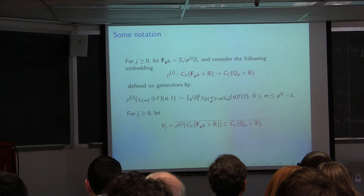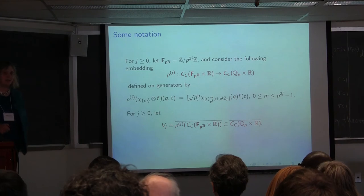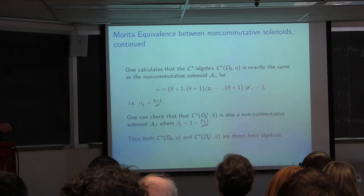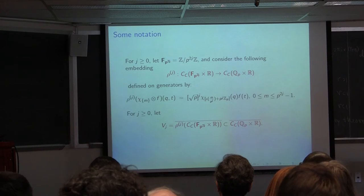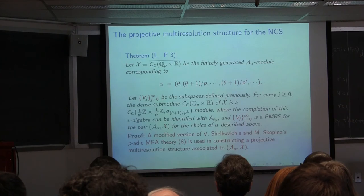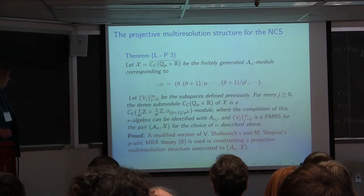We had to study p-adic wavelets — finding work by Shelkovich and Skopina, by Emily King, and by Benedetto and Benedetto — and modified what had been done there somewhat. We found the V_j's embedding inside the module, corresponding to Rieffel's original equivalence bimodules between the pieces of the direct limit terms. We were thus able to construct an explicit projective multi-resolution structure in this case, using those p-adic wavelet constructions with slight modifications.